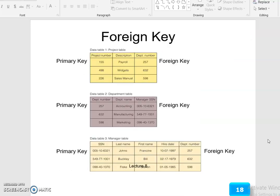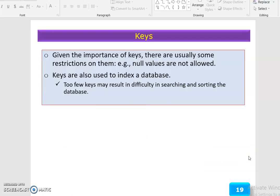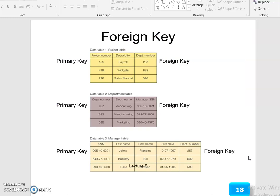Foreign key to primary key relationships: from the department table, a foreign key connects to a primary key. Given the importance of keys, there are usually some restrictions on them. For example, null values are not allowed. Keys are also used to index a database; too few keys may result in difficulty searching and sorting the database.